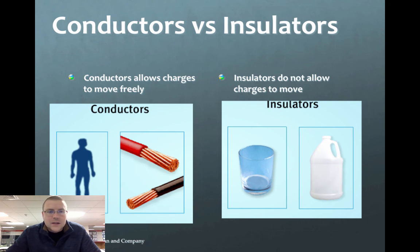Which brings us to the last topic here of conductors versus insulators and the main difference of those. Conductors are made of things that allow charges to move freely, allow electrons to freely go from one atom to the next. And insulators, they basically hold on to their charges. They don't allow them to move. So like glass and plastic, those are good insulators, while metals and humans make good conductors.